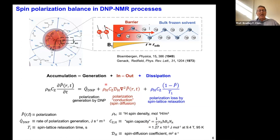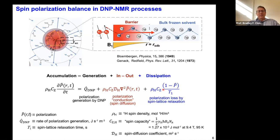For the spin polarization balance, we have a proton density, a quantity I call C_Z — effectively a spin capacity analogous to heat capacity — that comes from the nuclear gyromagnetic ratio, magnetic field strength, and allows us to calculate the equivalent of a heat capacity in spin terms at a given field and temperature. We have a polarization generation term from DNP because we're exciting continuously with microwaves, so this term is finite. And we have a polarization conduction term — this is spin diffusion — with the polarization second derivative, proton density, the spin capacity, and a proton spin diffusion coefficient.